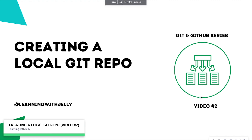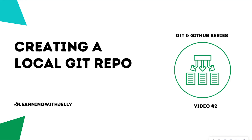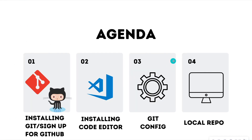Hello everyone, and welcome back to Learning with Jelly. Today we're on video number two of how to get Git for our Git and GitHub series. This video is going to walk you through how to create a local Git repo. Our agenda for today: we're going to install Git and sign up for GitHub, install a code editor called Visual Studio Code, go over a Git config file, and then build out a local repo.